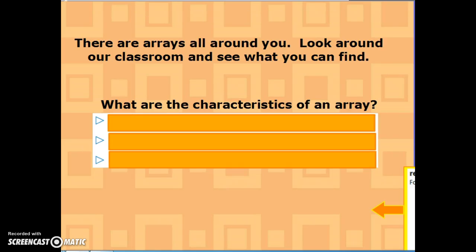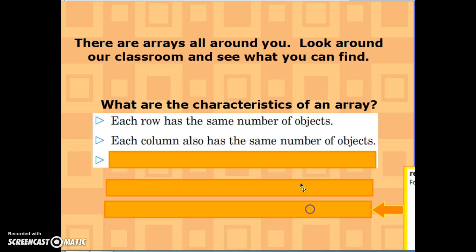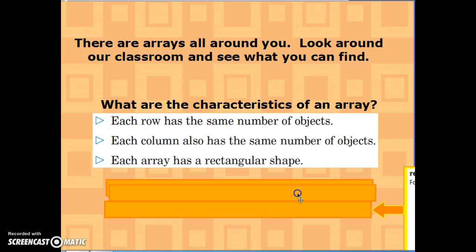There are arrays all around you. Look around our classroom and see what you can find. Let's look at the characteristics of an array. The first characteristic is that each row has the same number of objects. Each column also has the same number of objects. And each array has a rectangular shape.